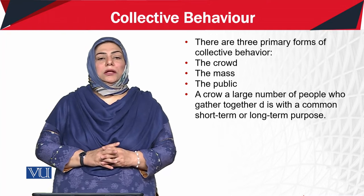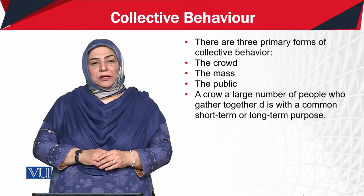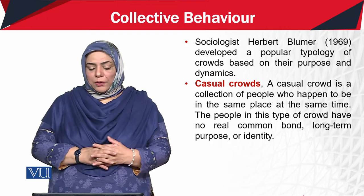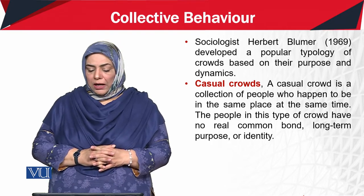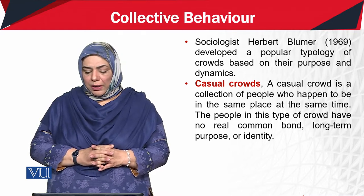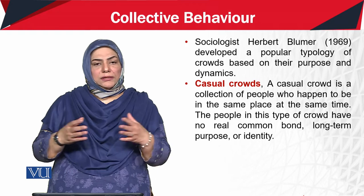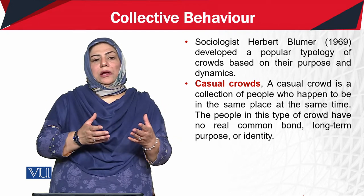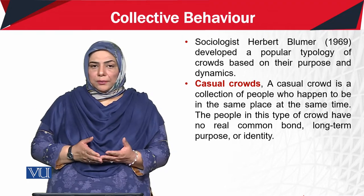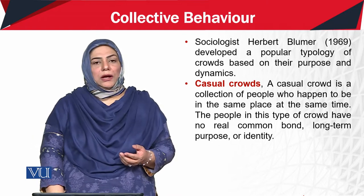The crowd can be further categorized into some categories. The first is the casual crowd. A casual crowd is a collection of people who happen to be in the same place at the same time. These are people who have gathered together, but they have no purpose, no theme, and are not organized.